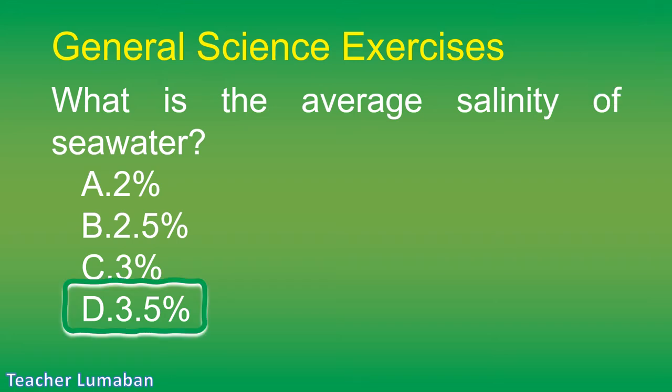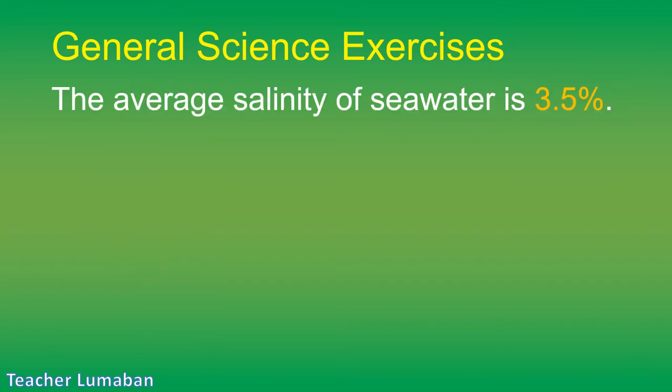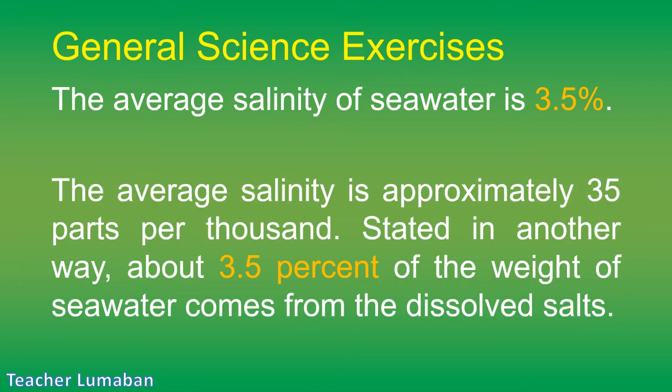The correct answer is Letter D: 3.5 percent. The average salinity of sea water is 3.5 percent. The average salinity is approximately 35 parts per thousand. About 3.5 percent of the weight of sea water comes from the dissolved salts.